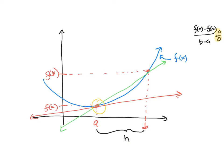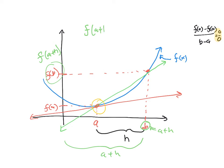Instead of calling this b, I'm going to rename it a plus h. This distance all the way to b can be considered a plus h. And if this is a plus h, then this y-value would be f of a plus h. So we can rewrite the formula for the secant line: instead of f of b minus f of a over b minus a, we replace f of b with f of a plus h, minus f of a, over a plus h minus a. And a plus h minus a simplifies to just h.